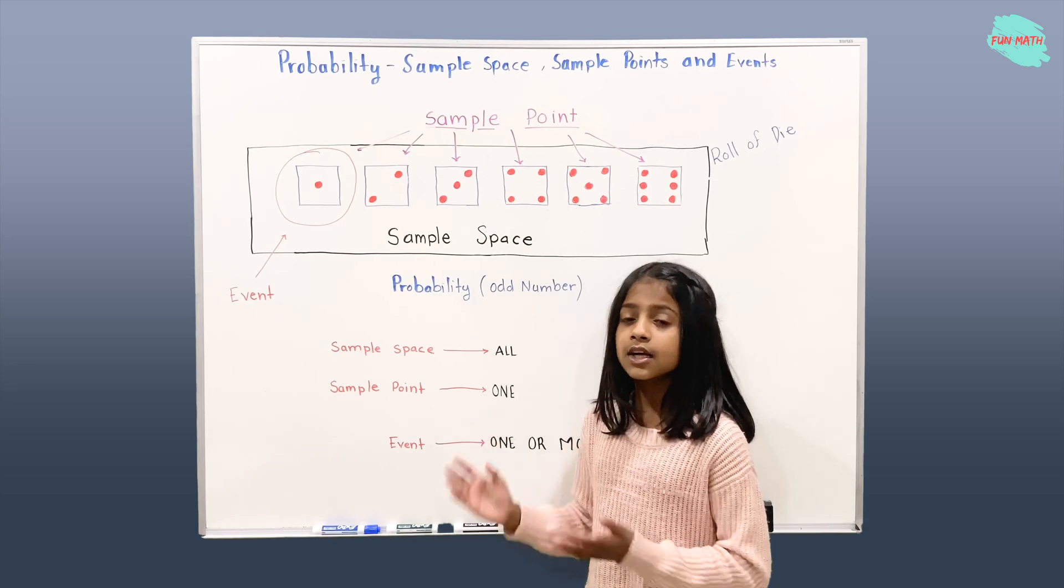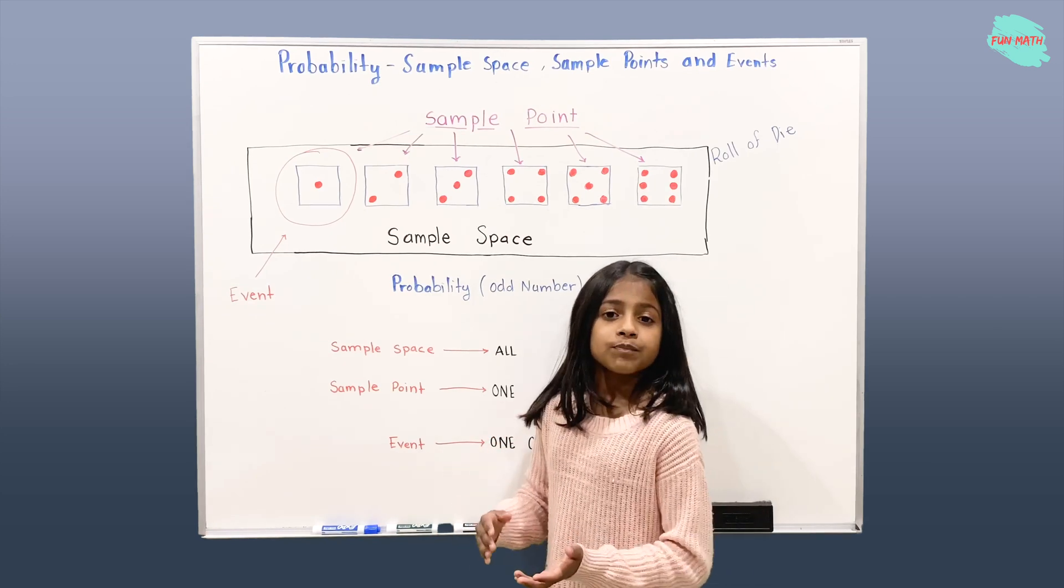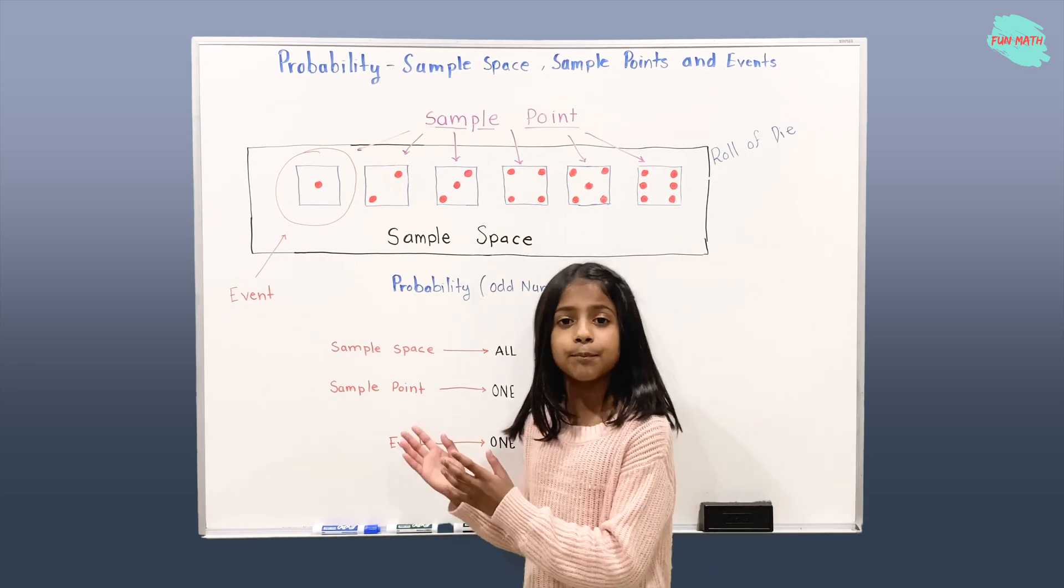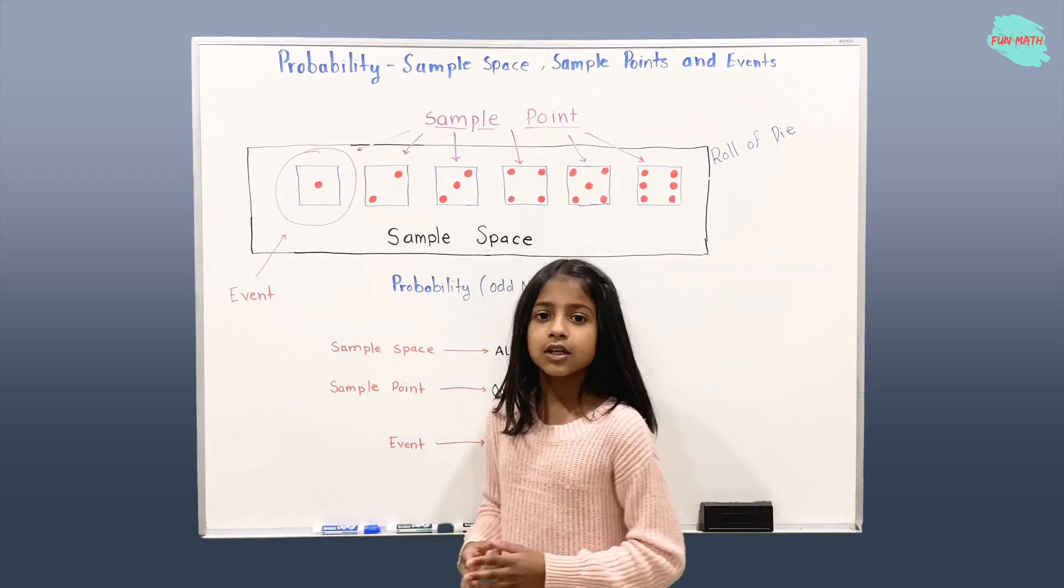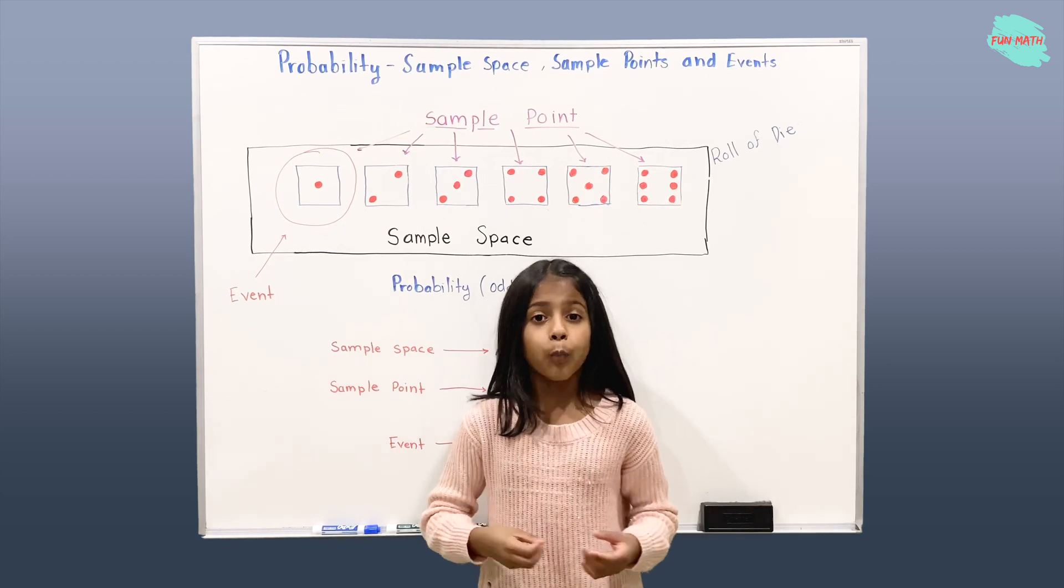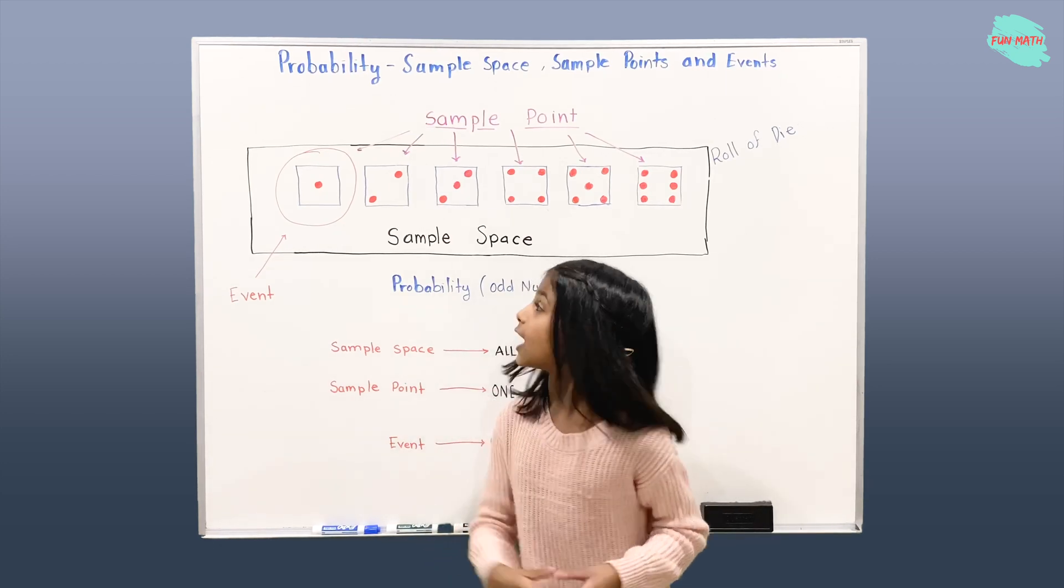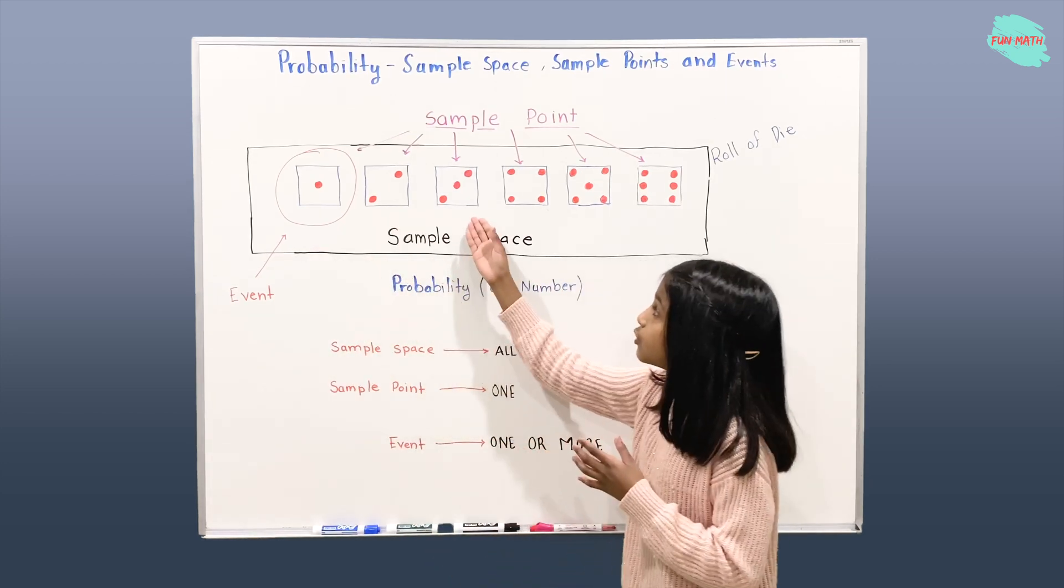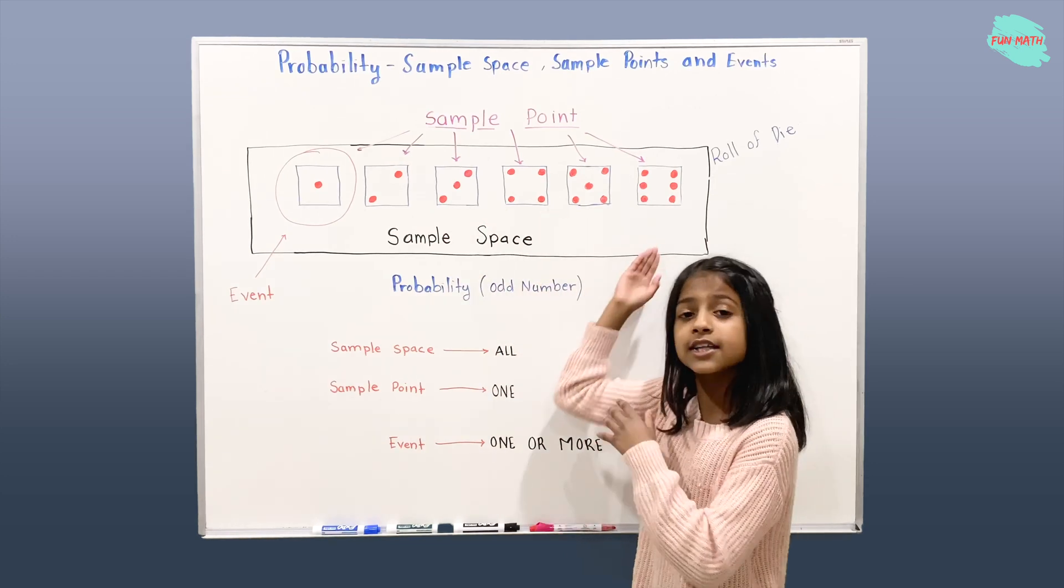Here there is a famous probability example, roll of die. Here there are six possible outcomes. When you roll of die, you might get 1, 2, 3, 4, 5, and 6.